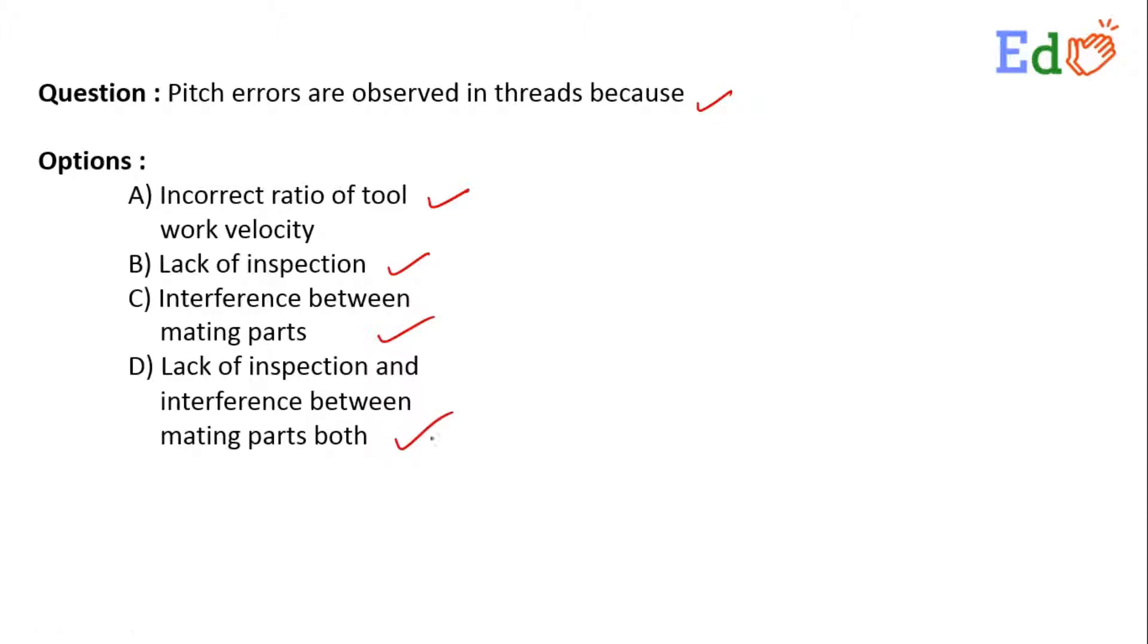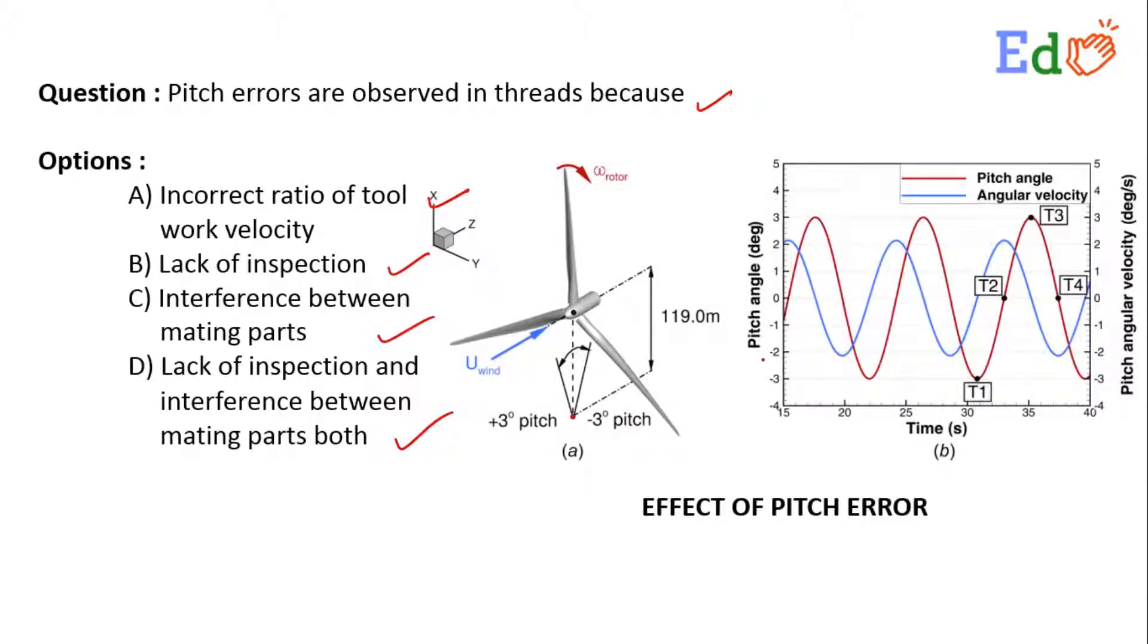For pitch to be correct, the ratio of the linear velocity of the tool and angular velocity of the work must be correct and this ratio must be maintained constant. Otherwise, pitch errors will occur.